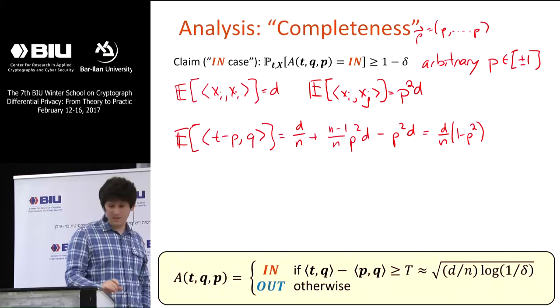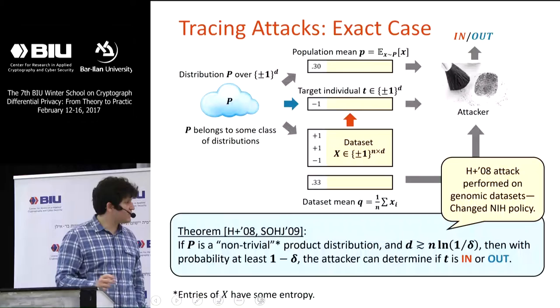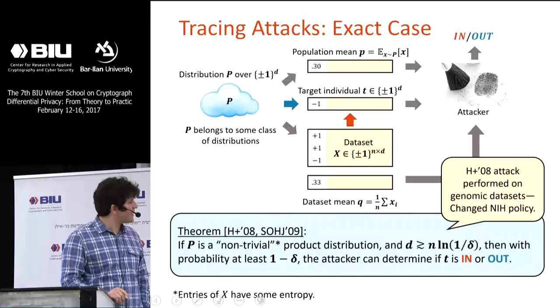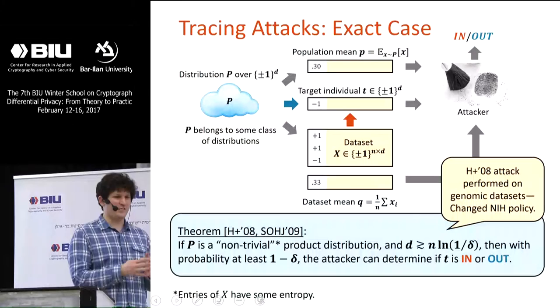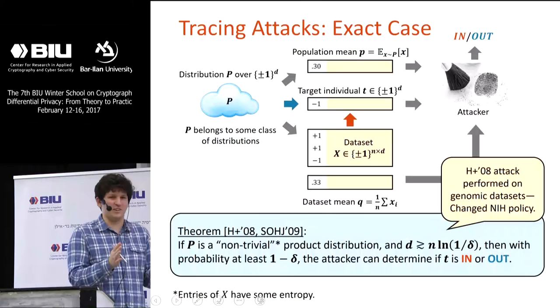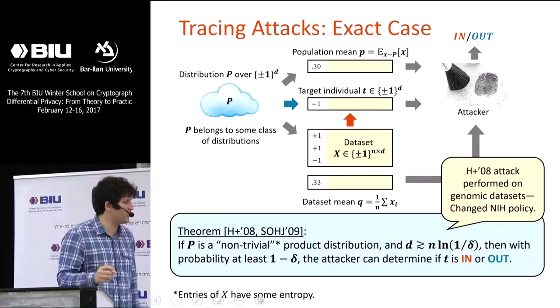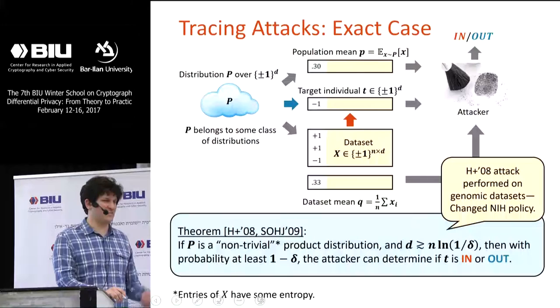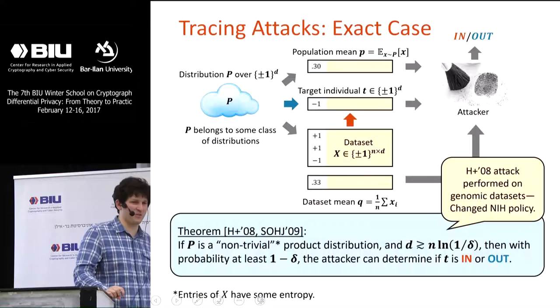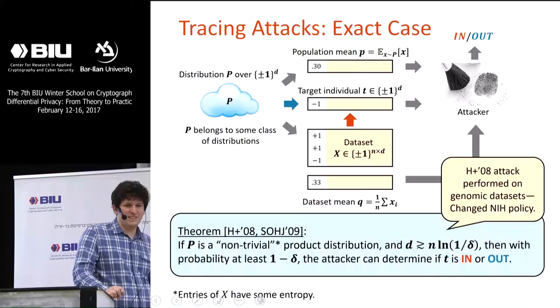The assumption that it's a product distribution is fairly strong. We're in a similar situation to the difference between model inversion and this model — you need something to be true about P. If P is not a product distribution, D is effectively one: you can have as many columns as you want, but they're all the same. However, the attack feels robust to model misspecification. For example, if it's a product distribution but one column equals another, the attack doesn't just die — the mean shifts a little bit smoothly.